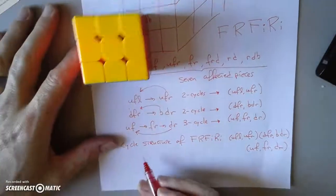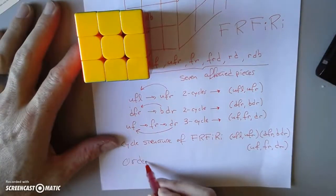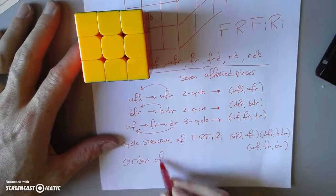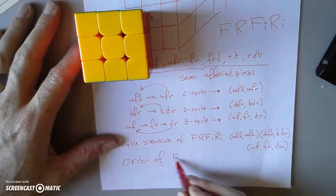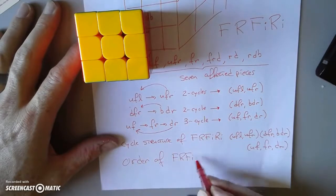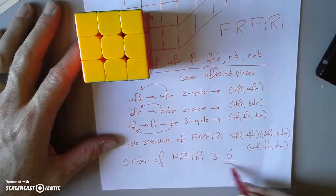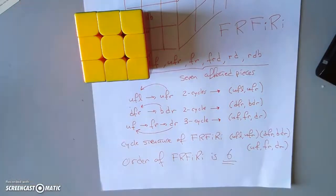So that means the order of F R F⁻¹ R⁻¹ is six. Hopefully that helps.